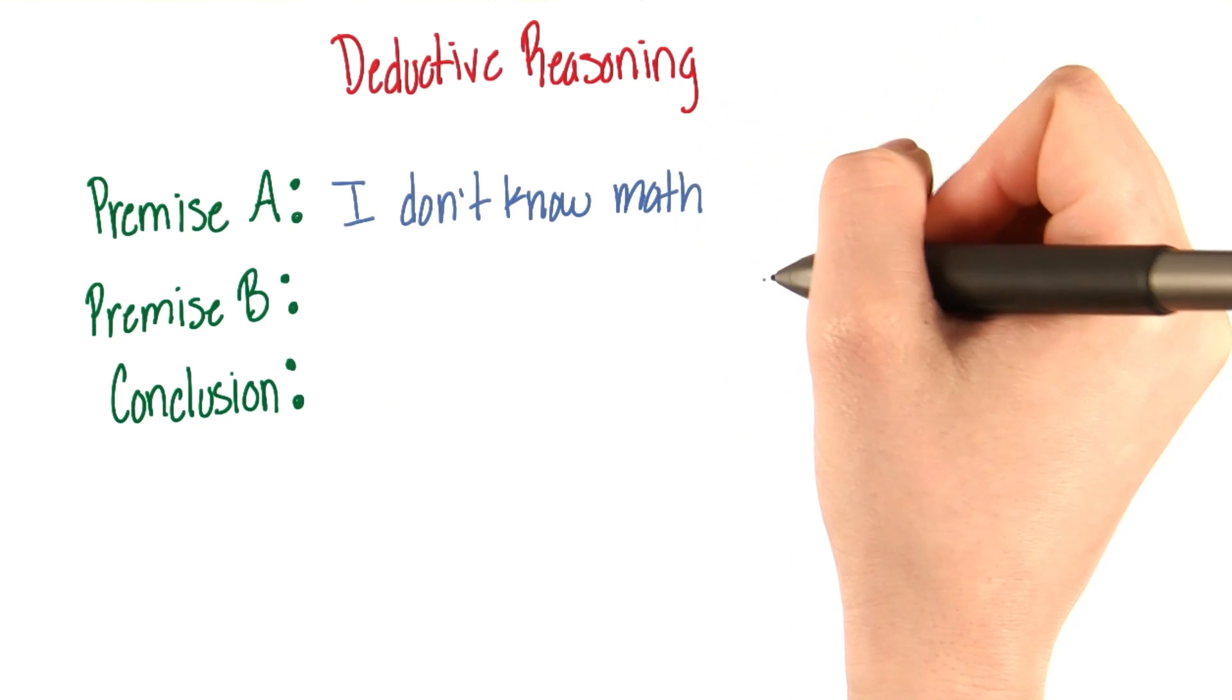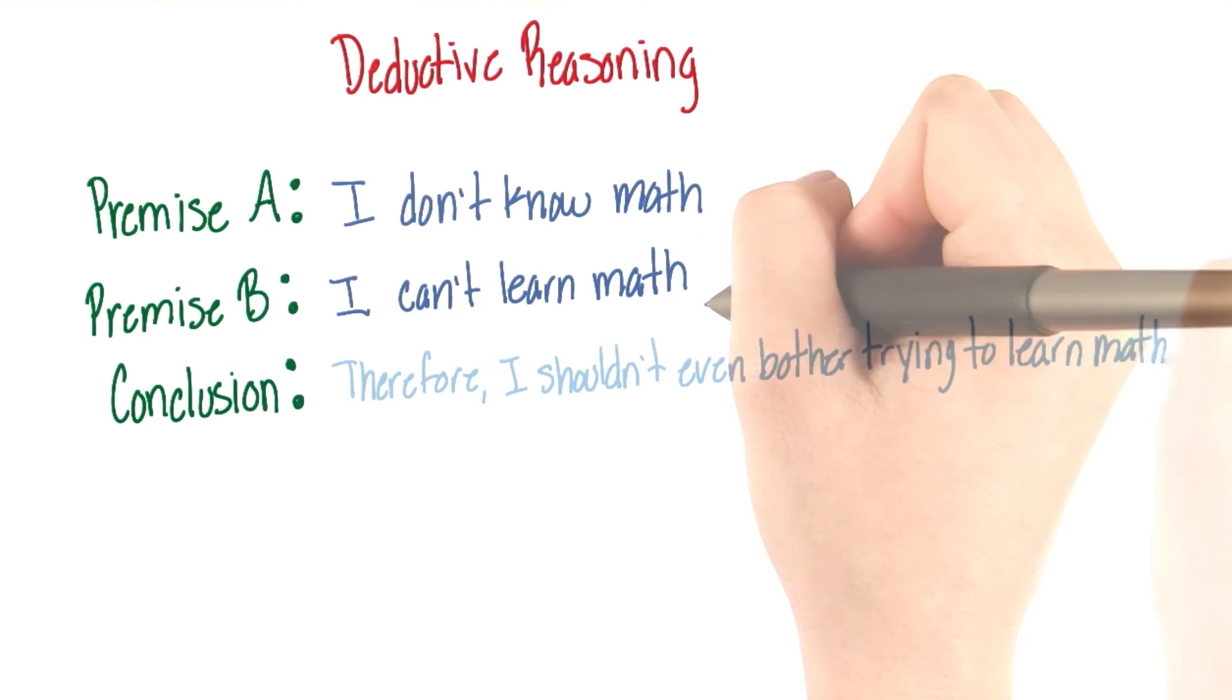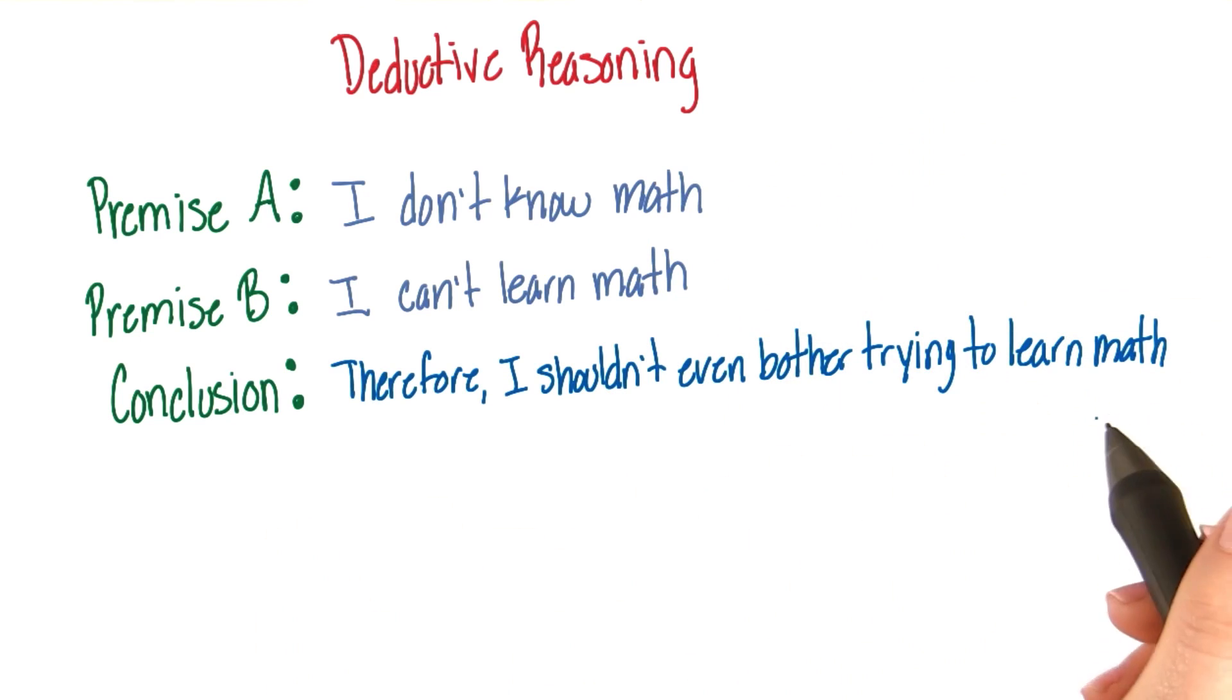Premise A is I don't know math. Premise B is I can't learn math. Therefore, I shouldn't even bother trying to learn math.